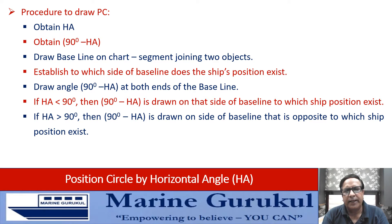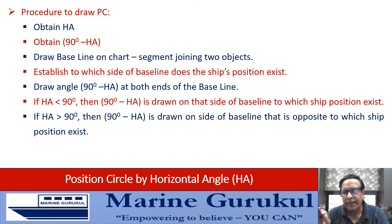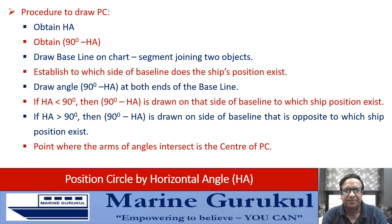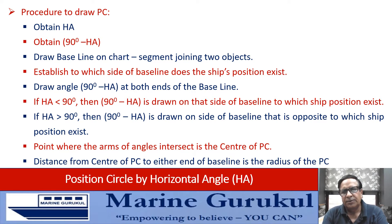If the horizontal angle is greater than 90 degrees, the value of 90 minus the horizontal angle is to be drawn on the side of the baseline that is opposite to where the ship's position exists. The point where the arms of these angles intersect is the center of the position circle. From that center, the distance to either end of the baseline forms the radius of the position circle.